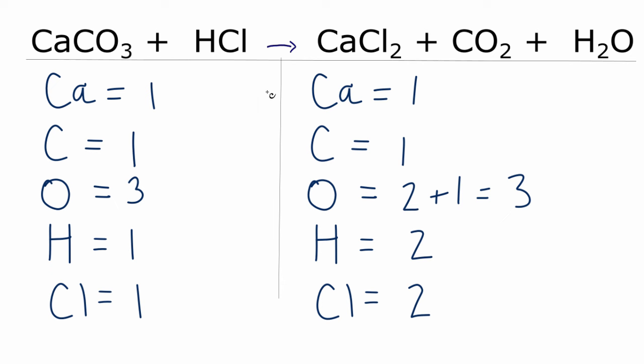That's pretty simple to solve. If we just put a coefficient of two in front of the HCl, now we have the one times the two. That gives us two hydrogens. And then the one chlorine times that coefficient of two. That gives us two chlorines. And now we have everything equal on both sides of the equation, and it's balanced.